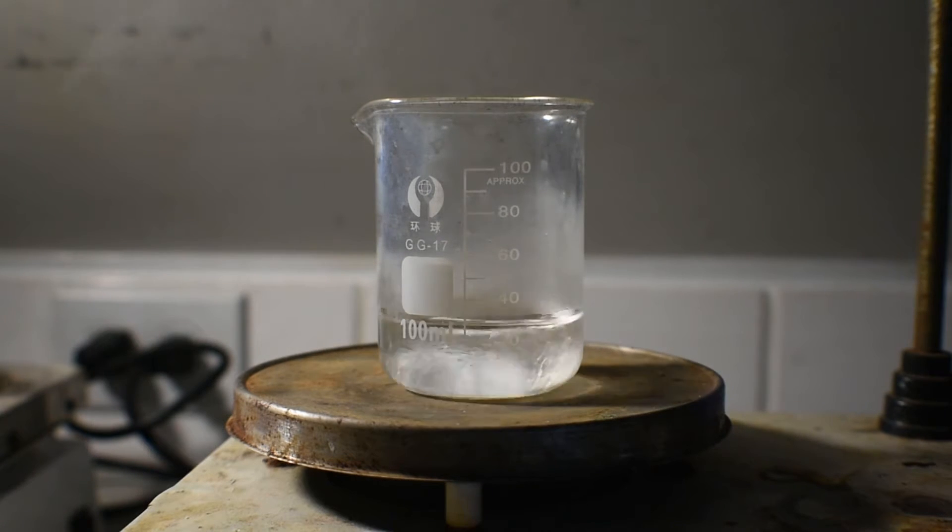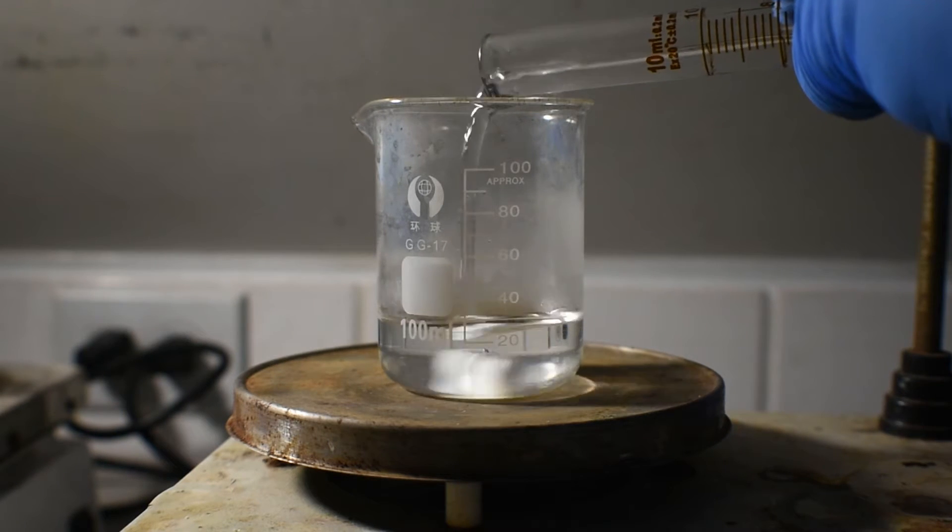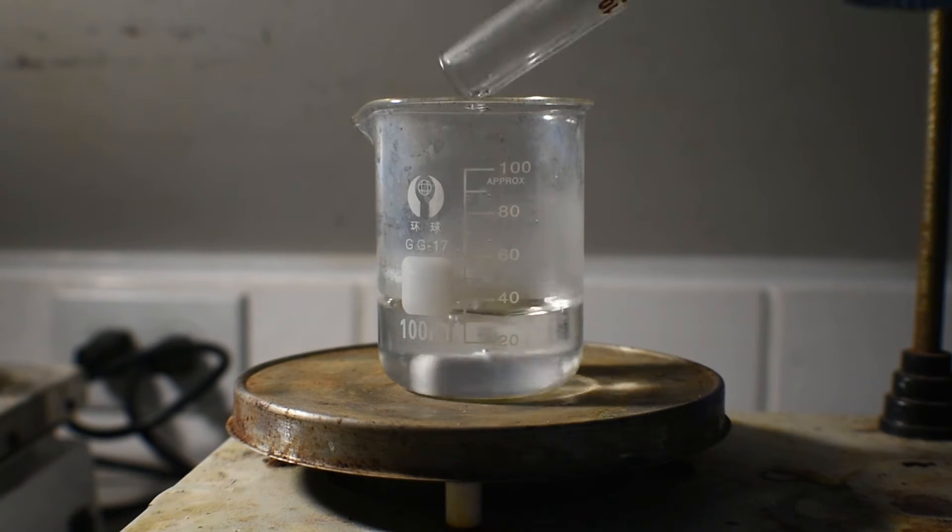This is stirred, and the ethylenediamine should go into solution. The graduated cylinder that the ethylenediamine was in is now washed with the distilled water, like I mentioned before. This is added to the rest of the solution.